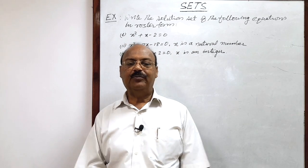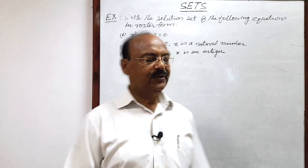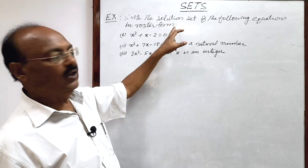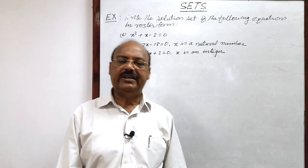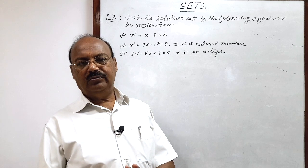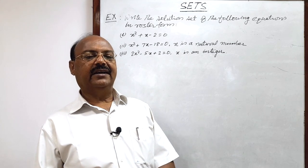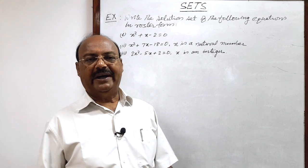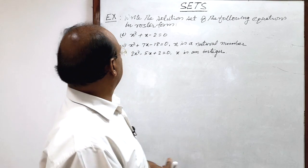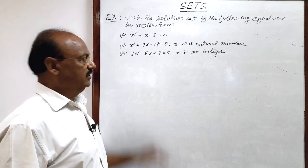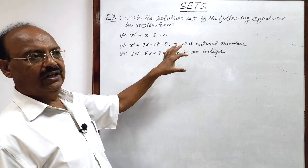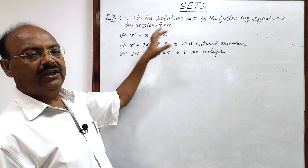Welcome students. Let us see a very interesting and important question from the chapter sets. The question is: write the solution set of the following equations in roster form. We have already discussed that sets can be represented in two different forms — roster form, also known as tabular form, and set builder form. Some quadratic equations are given here in three parts and we have to find the solutions and write the solution set in roster form.